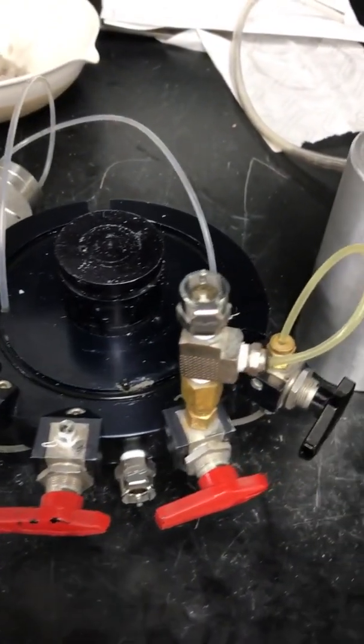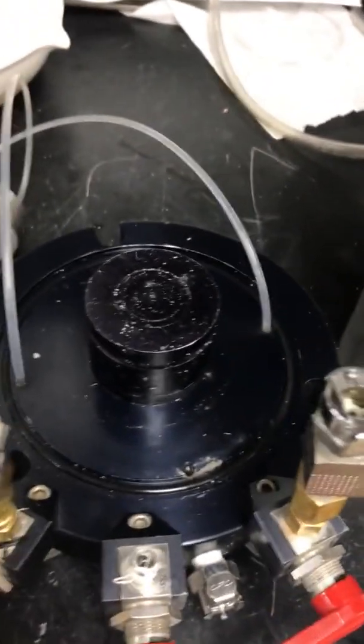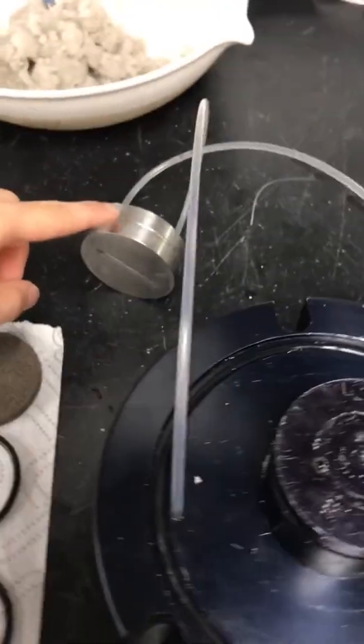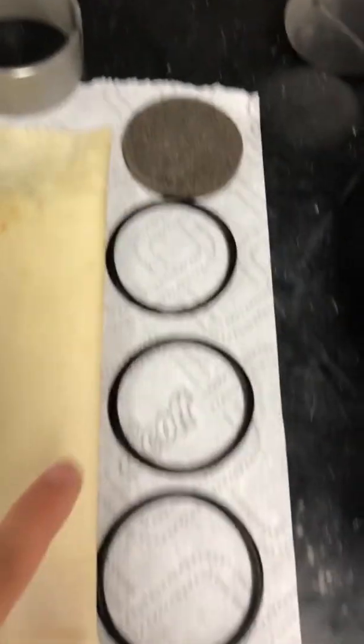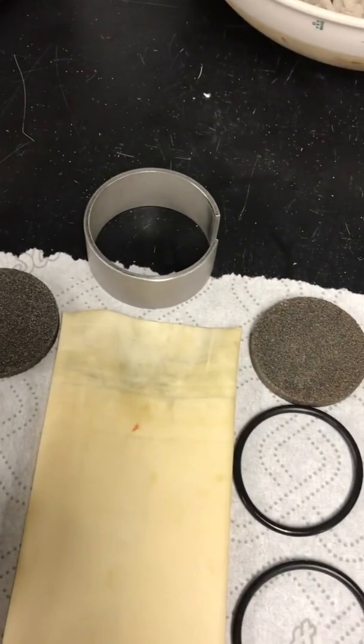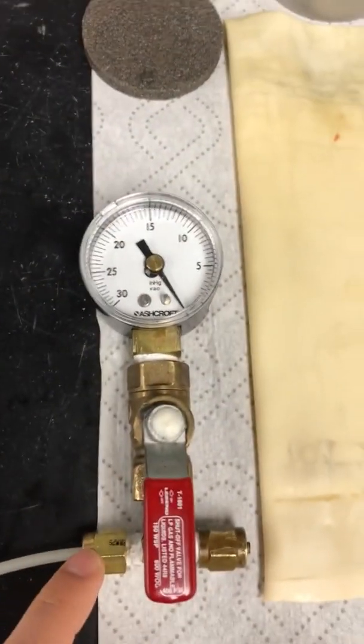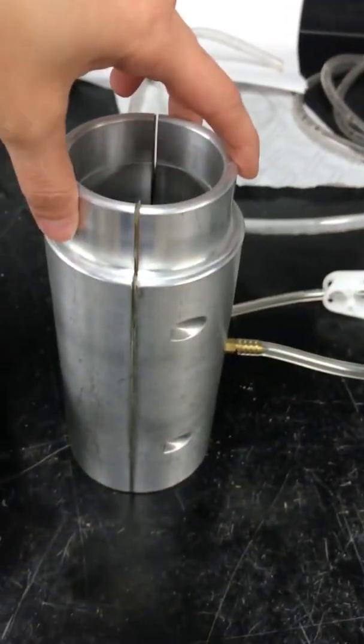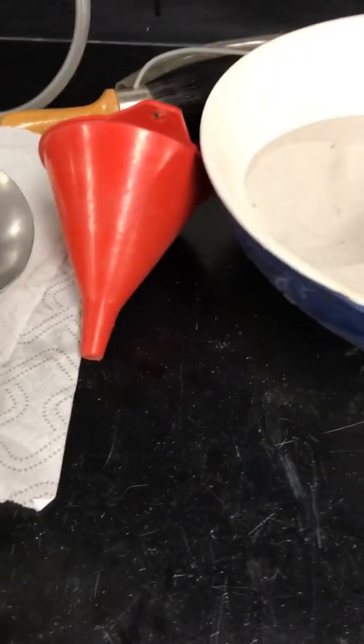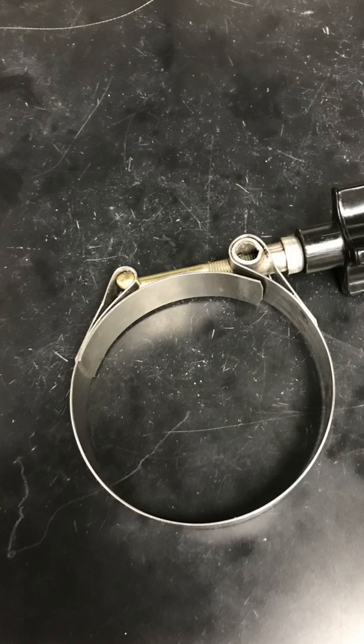To set up a specimen for a triaxial test, we're going to first need this bottom component, which includes the pedestal along with the top cap. We're also going to need three O-rings, two pore stones, an O-ring stretcher, a membrane, a vacuum pressure gauge, along with the membrane stretcher, and we're also going to need a metal scoop and a funnel. We will also need one of these.